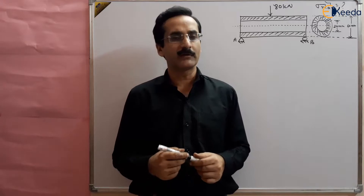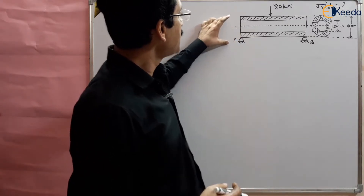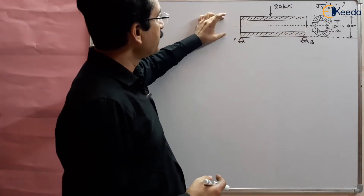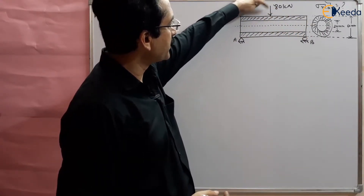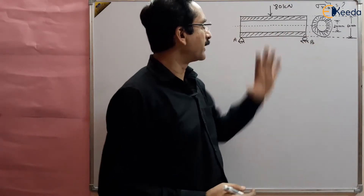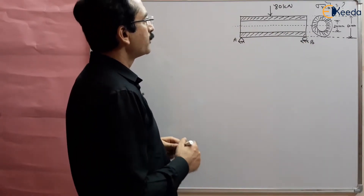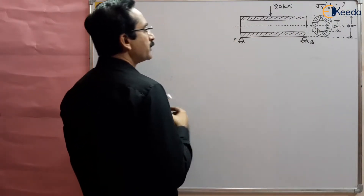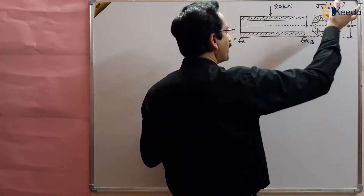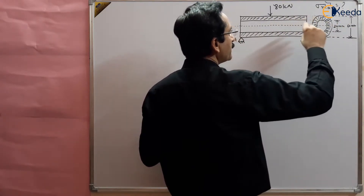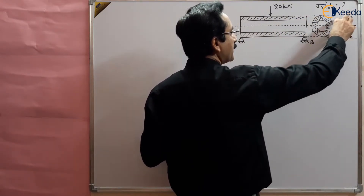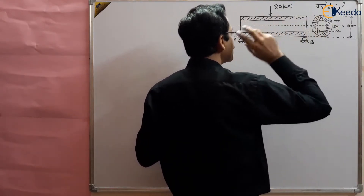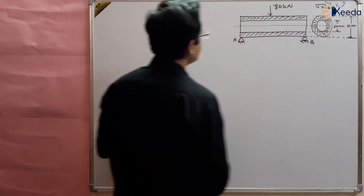In this question we are given a shaft which is acting as a beam — it is hollow. A load of 80 Newton is applied and it is simply supported at two ends. We have to find out the maximum stress in the material, which is the bending stress. The hollow beam shaft has 20 mm inner diameter and 40 mm outer diameter.